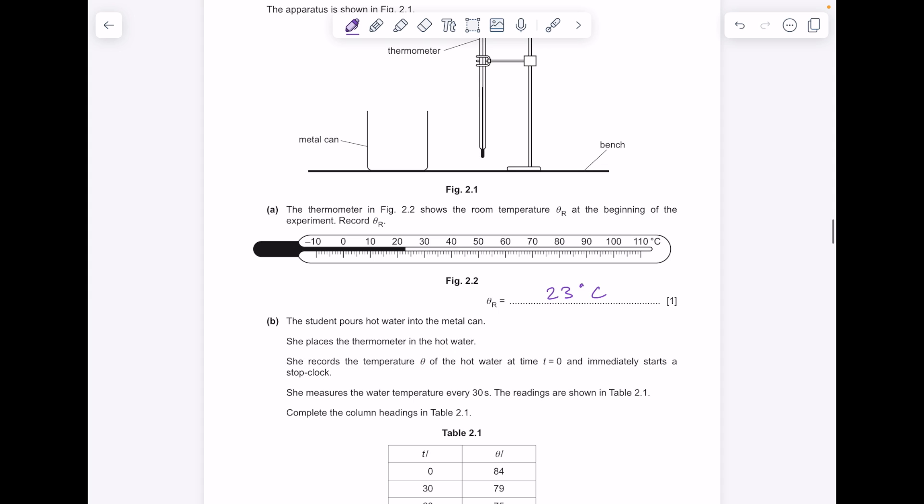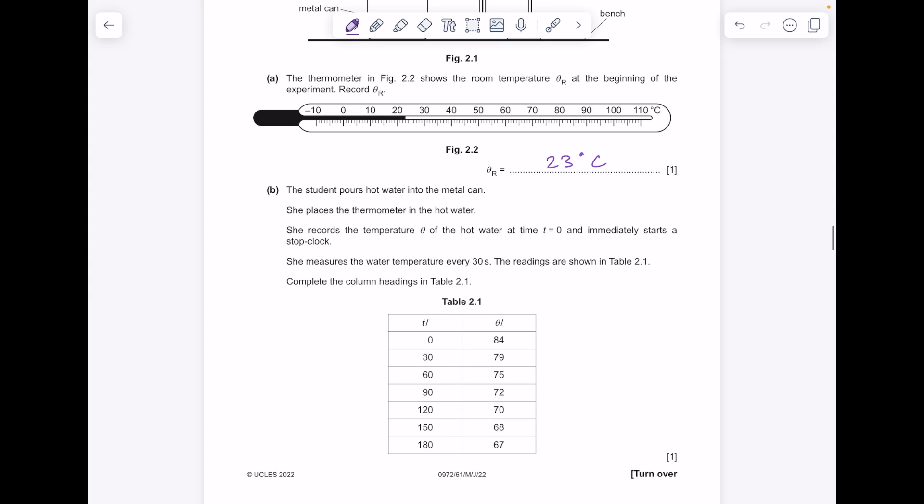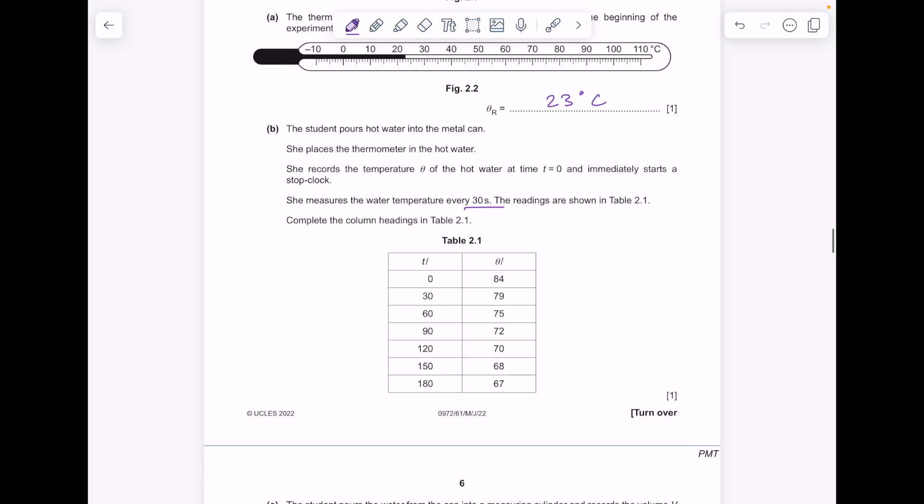The student pours hot water into the metal can, she places the thermometer in the hot water. She records the temperature of the hot water at T equals zero and immediately starts the stop clock. She measures the water's temperature every 30 seconds and here are the readings shown in 2.1. Complete the column headings. I think this is the thing with CIE—you have to read every word because it's not really clear where the question actually even starts. You don't want to miss any easy marks. So time is in seconds and that temperature is in degrees Celsius.